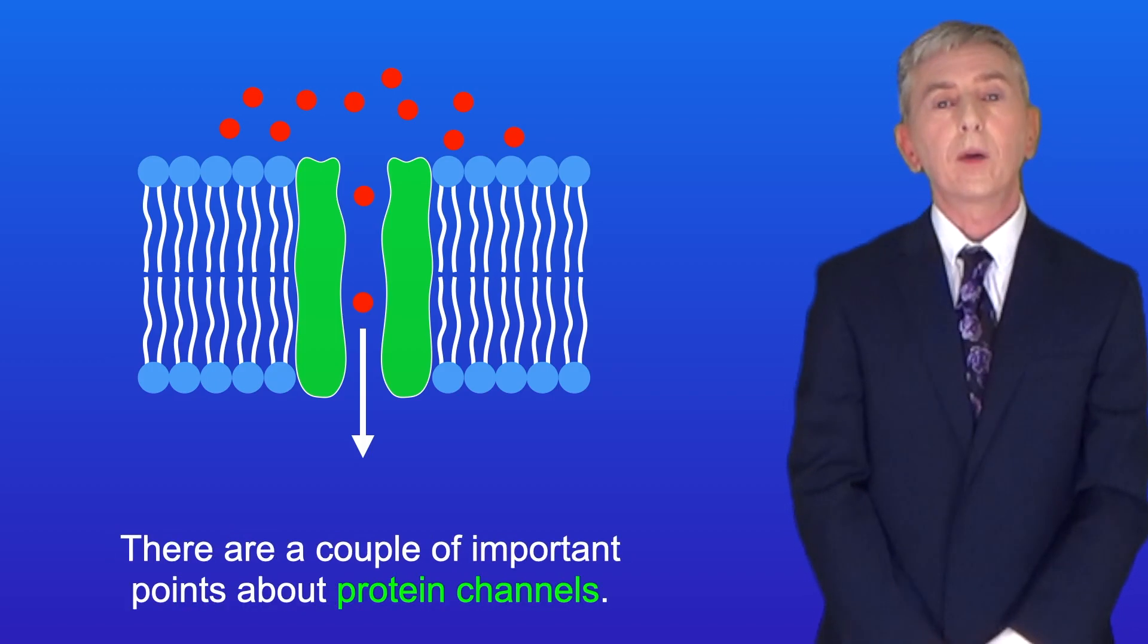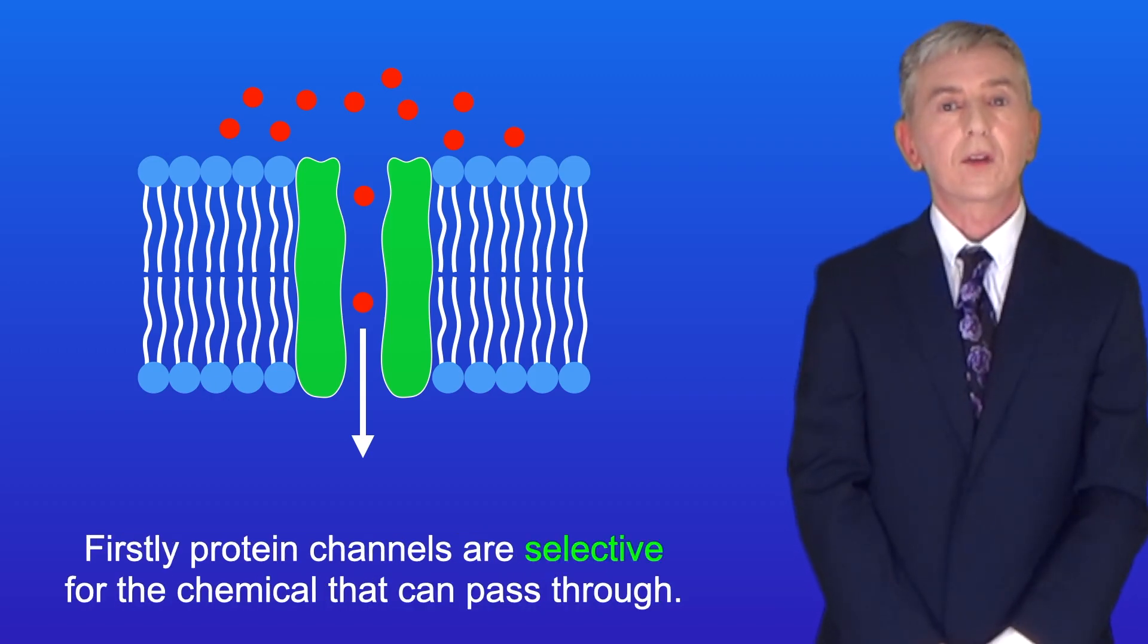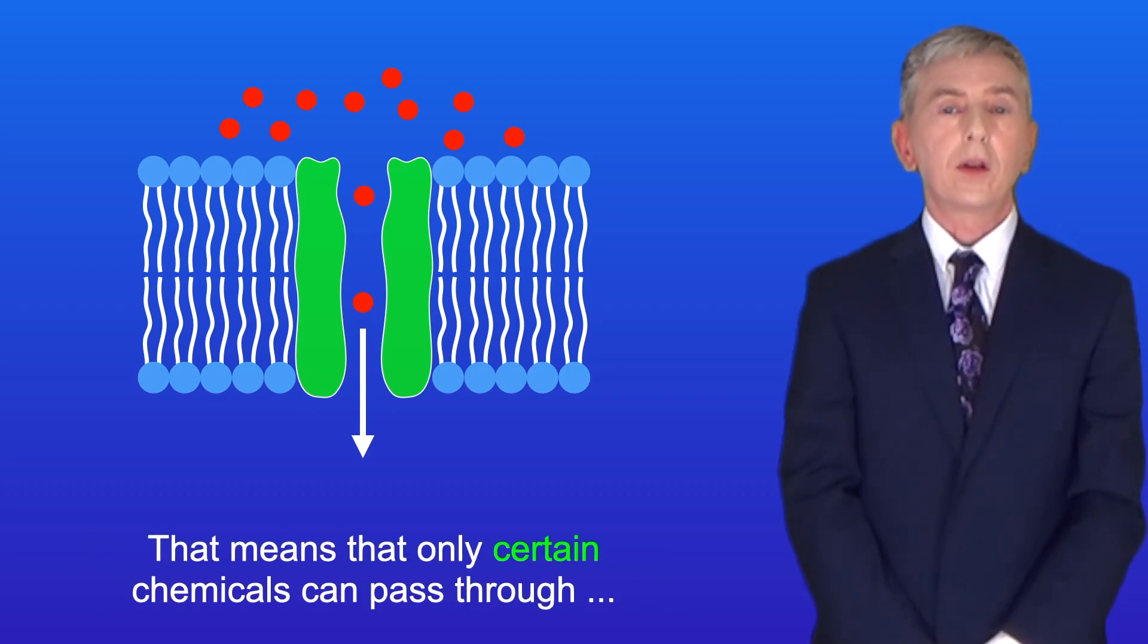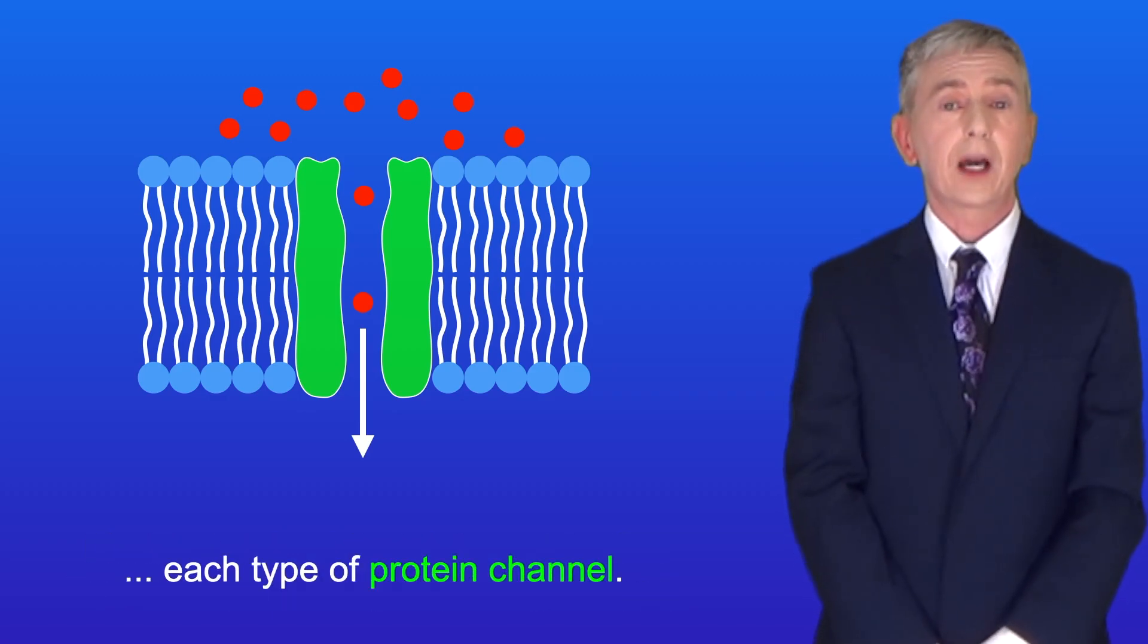There are a couple of important points about protein channels. Firstly, protein channels are selective for the chemical that can pass through. That means that only certain chemicals can pass through each type of protein channel.